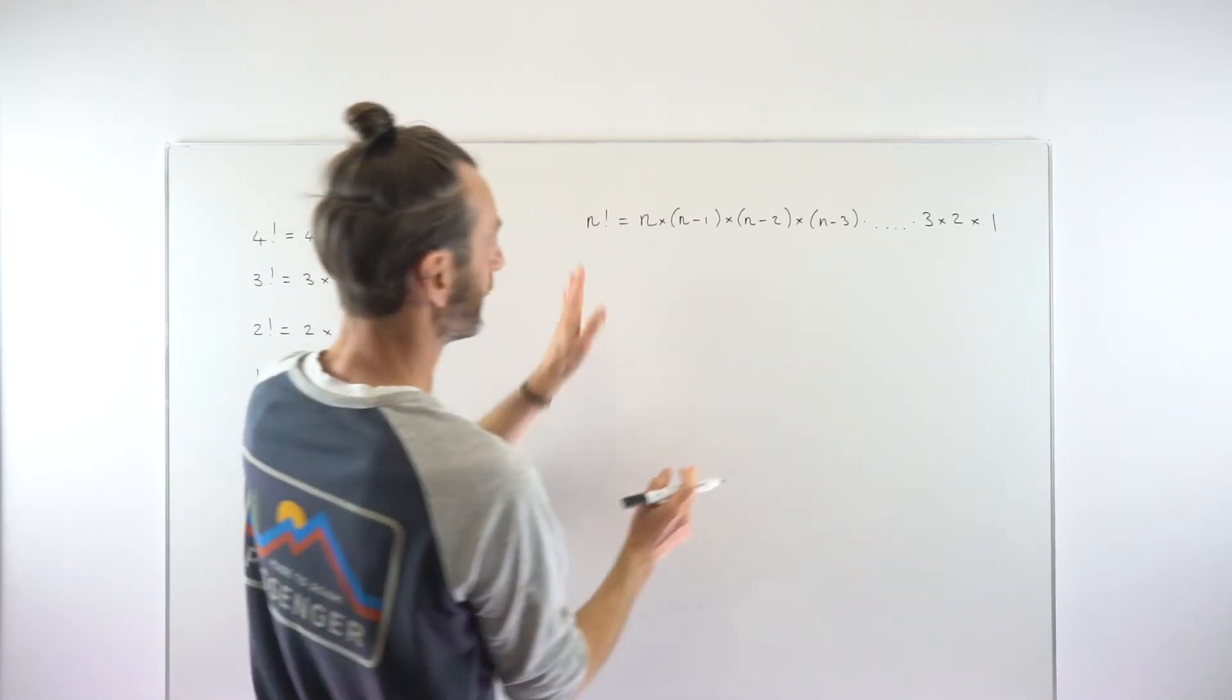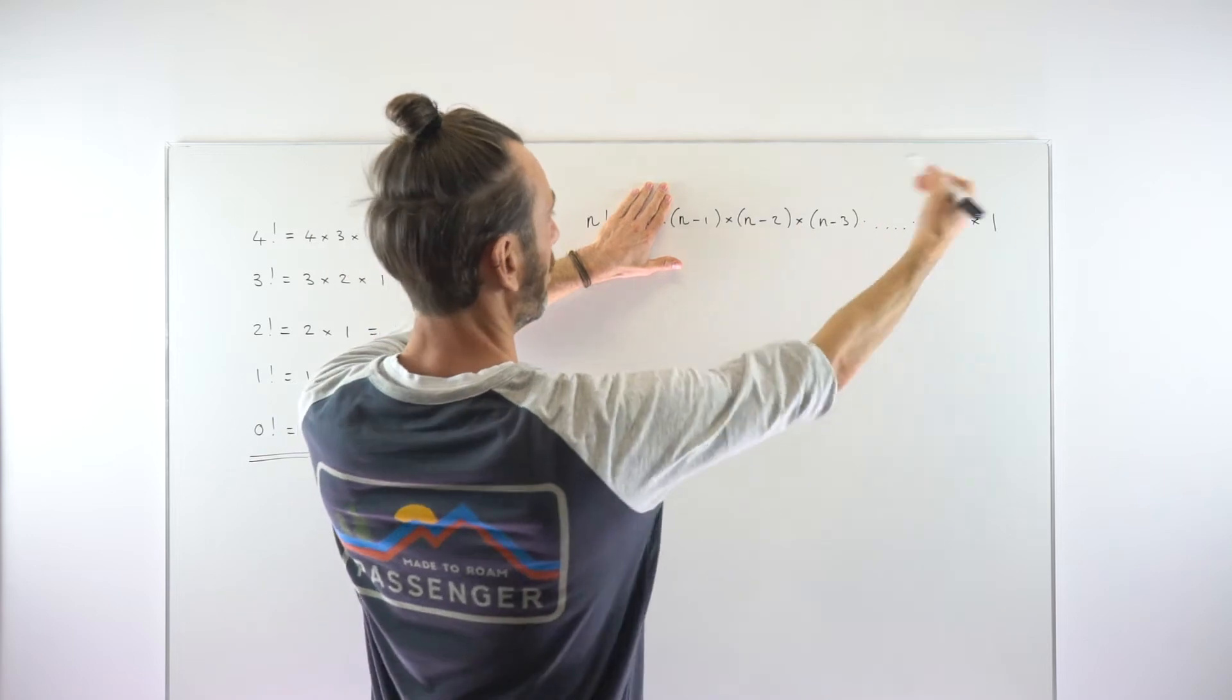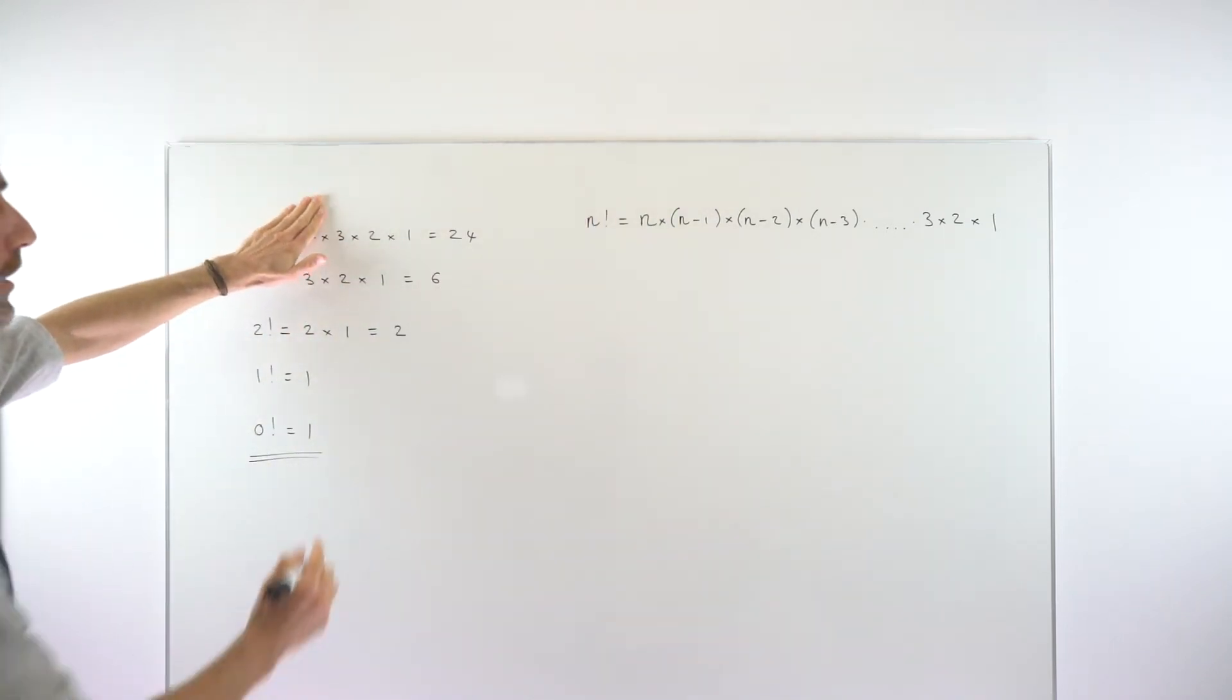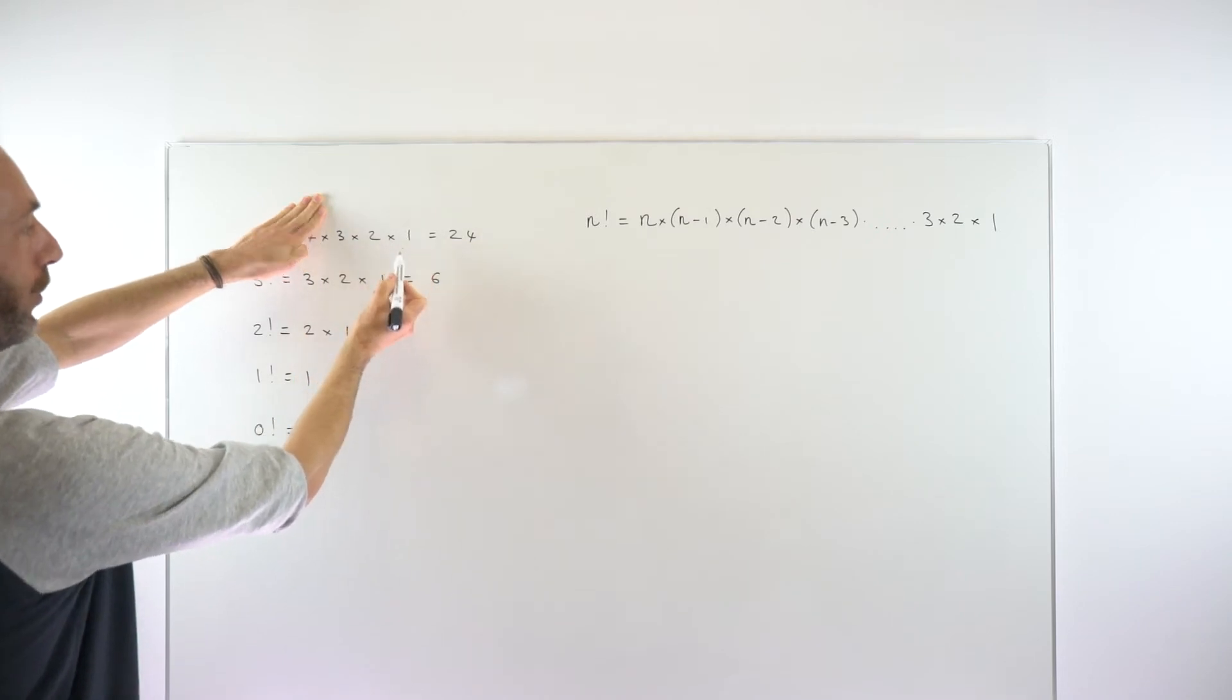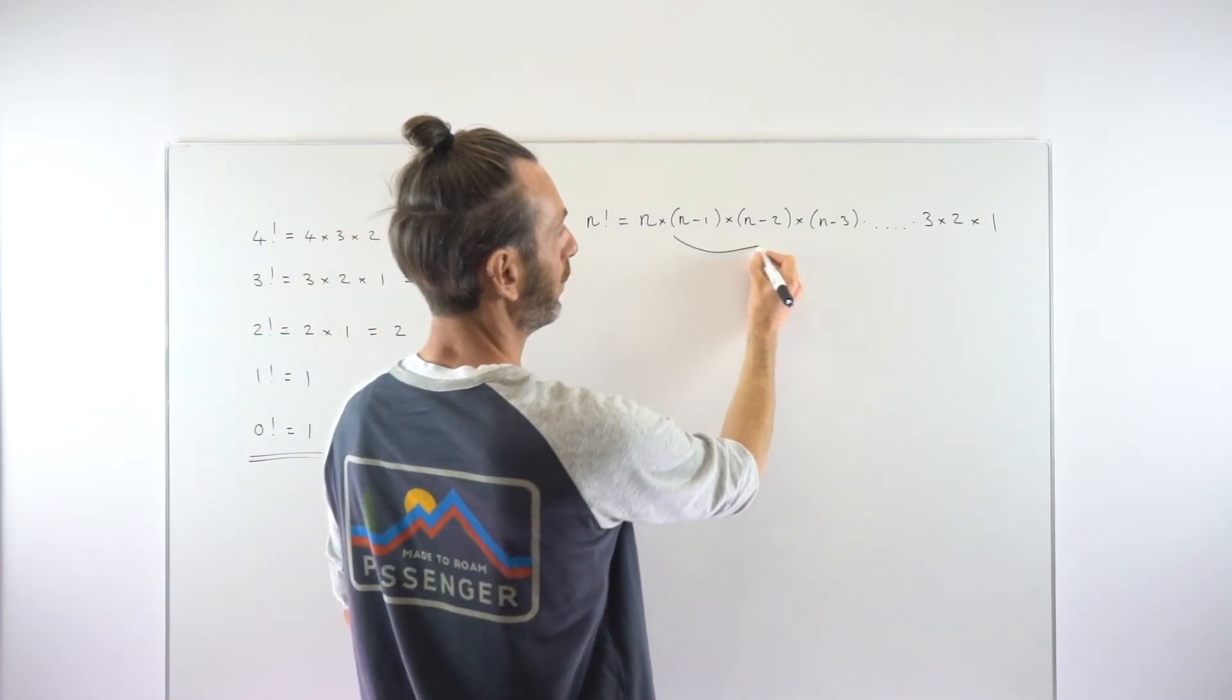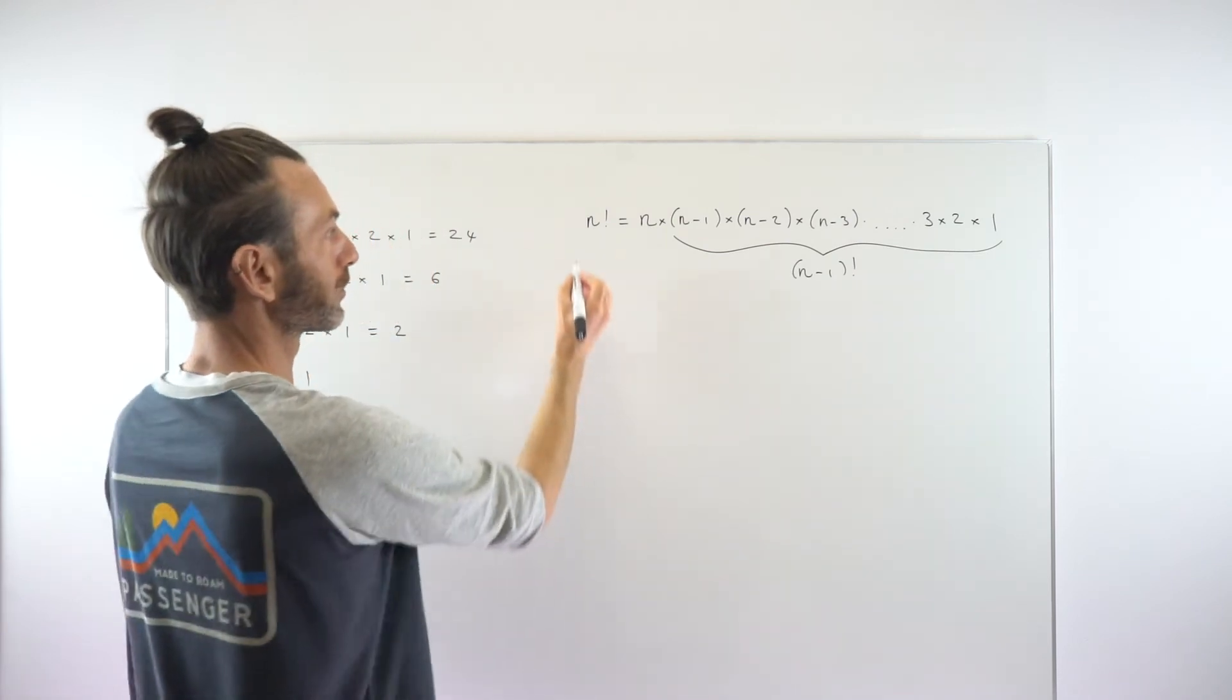If you look at this expression and you take away the n, then what have we got left? Well, we've got n minus 1 times n minus 2 times n minus 3 all the way down to 1. So that is also a factorial expression, isn't it? In the same way that if you knocked off the 4 here, you're left with 3 times 2 times 1, which is 3 factorial. Or if you knocked off the 3 here, you've got 2 times 1, which is 2 factorial. So this part here, not including the n, but all the stuff after the n, that is essentially just then n minus 1 factorial.